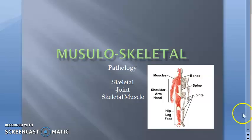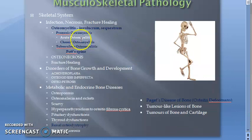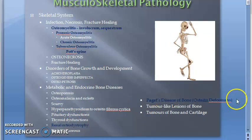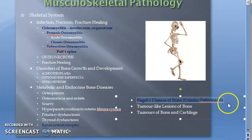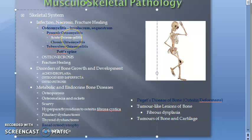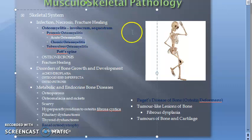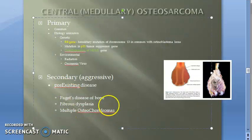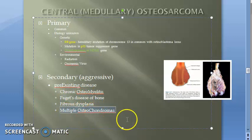Looking at notes from the previous video: Paget's disease of bone, also known as osteitis deformans, fibrous dysplasia — a tumor-like lesion of bone that can become osteosarcoma later — and chronic osteomyelitis can all lead to osteosarcoma. So secondary osteosarcoma pre-existing causes are: chronic osteomyelitis, Paget's disease of bone, fibrous dysplasia, and multiple osteochondromas.